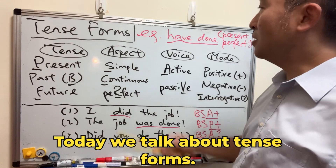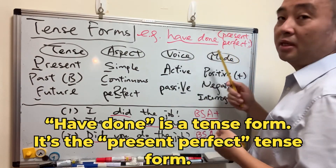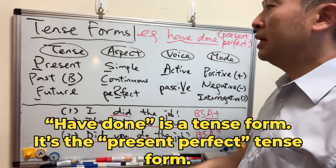Today we talk about tense forms. What is a tense form? 'Have done' is a tense form — it's the present perfect tense form.